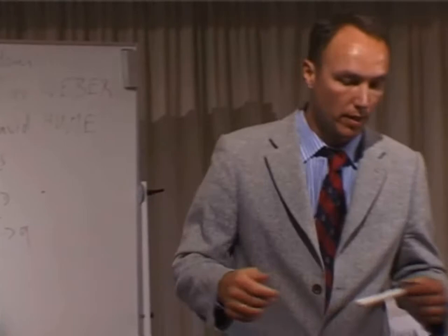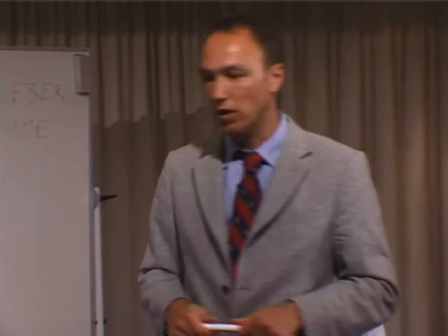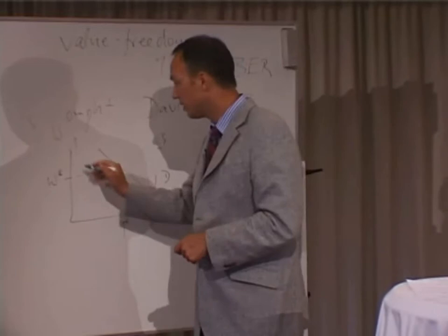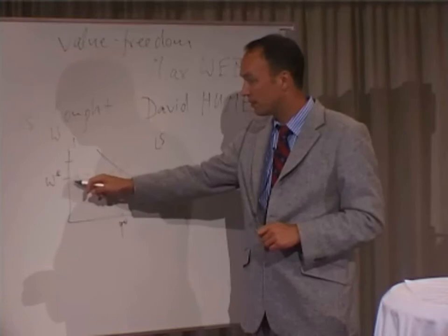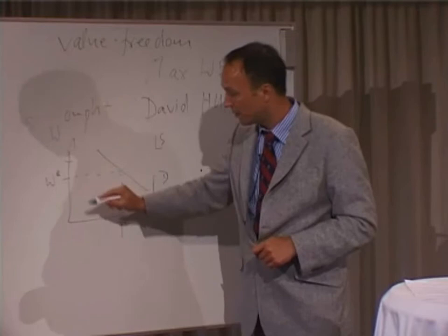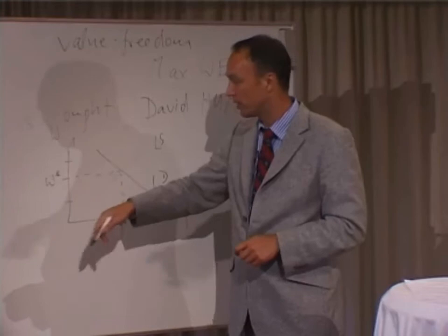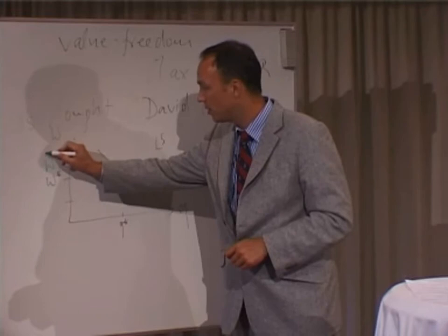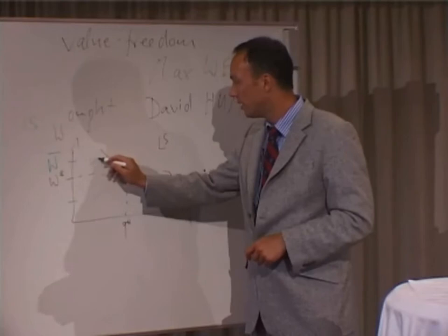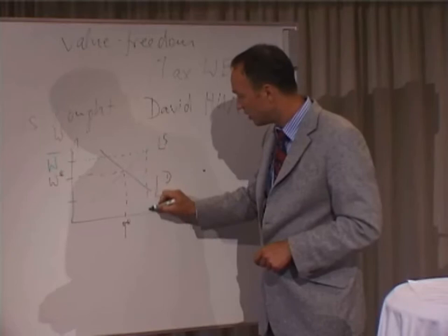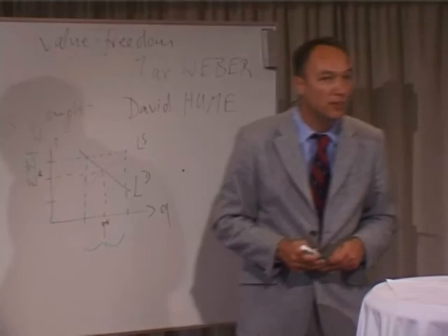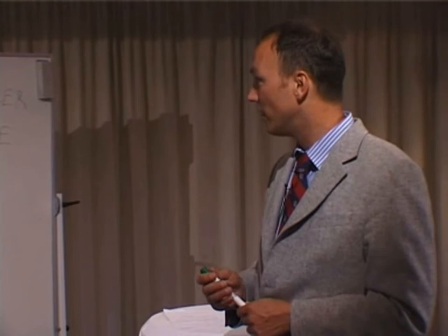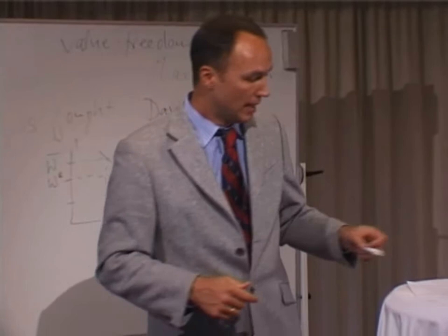We can analyze the impact of a minimum wage law. If the minimum wage is set below the market wage rate, there will be no impact at all. A problem arises if we set the minimum wage rate above the market rate, because at that rate we have a higher demand for labor but a greater supply — and this difference is called unemployment. So we have a higher supply of labor than demand for labor, and this is exactly what unemployment is all about.